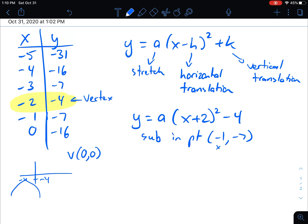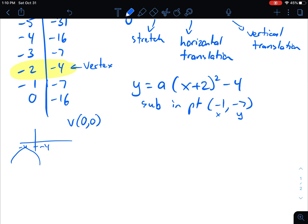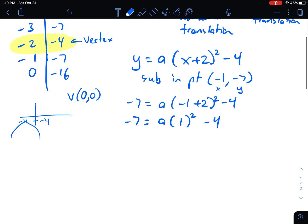Those are basically the smallest numbers I can see. The negative 1 is my x. The negative 7 is my y. And let's plug them in and see what we end up getting for a. So we get negative 7 equals a bracket negative 1 plus 2 squared minus 4. And we get negative 7 equals a bracket negative 1 plus 2 is positive 1.